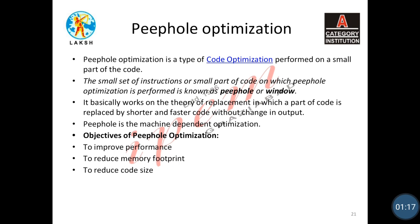Peephole optimization is a machine-dependent optimization. Its objectives are to improve performance, to reduce memory storage, and to reduce code size.